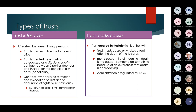A trust mortis causa is created by a testator in his will and only takes effect after the testator's death. The literal meaning of mortis causa is 'death is the cause' — mortis refers to death, meaning someone who does something because of an awareness that death is approaching. Its administration is regulated by the Trust Property Control Act.